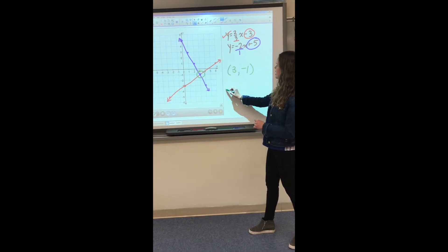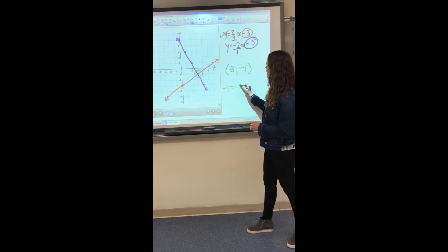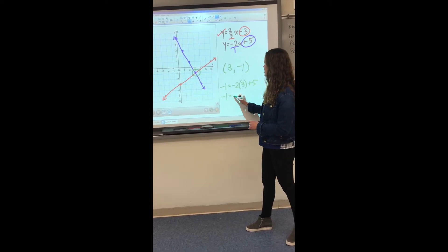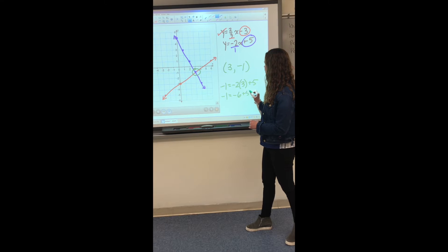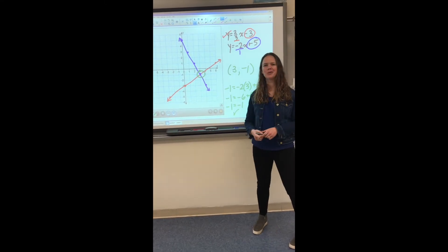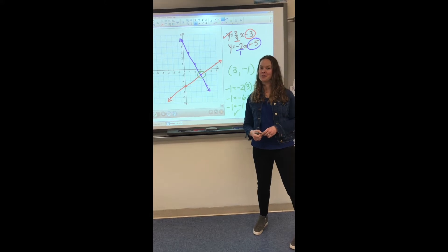So this one is correct. Our top equation is correct. I'm going to erase that for a little extra room. For the second equation, negative 1 is equal to negative 2 times 3 plus 5. Negative 1 is equal to negative 6 plus 5. Again, we find that our solution matches. So we know we have found the correct point.